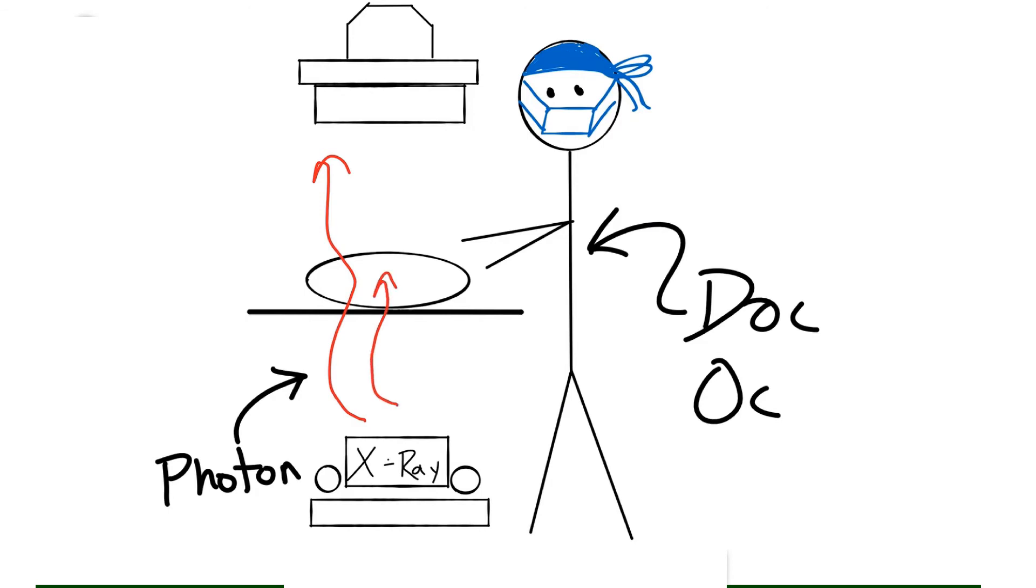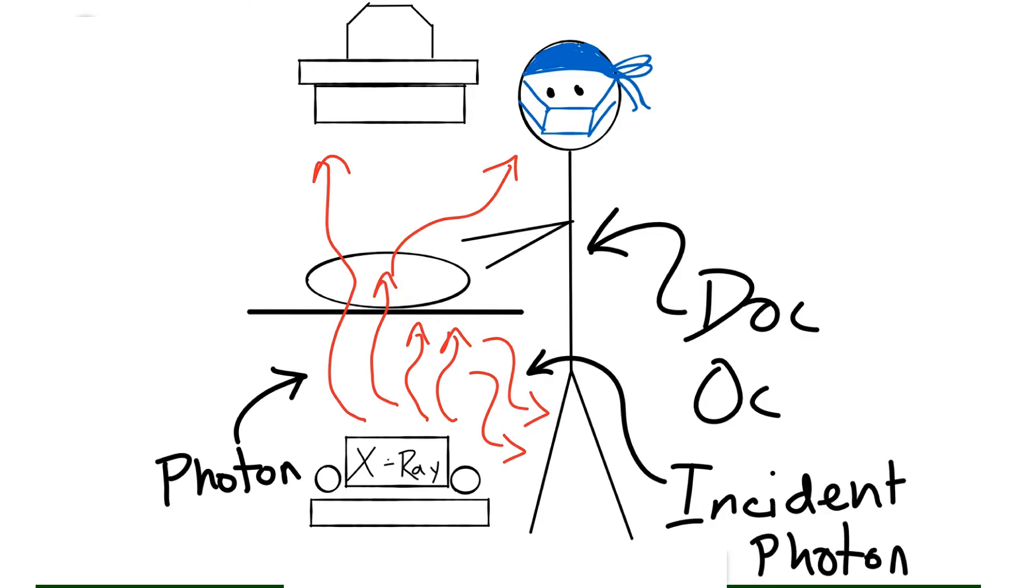However, some photons can hit the patient and deflect towards the doctor in the upper body, or they can hit the table and be deflected towards the physician's lower body. These are the incident photons, the photons that are being redirected from the patient or the table. It's much more common for a physician to be affected in the lower body due to increased density of the table than the patient.